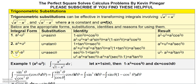If you have u squared minus a squared, you could let u equal a secant theta. Then u squared minus a squared equals a squared secant squared theta minus a squared. Factoring out a squared gives secant squared theta minus 1, which results in a squared times tangent squared theta.